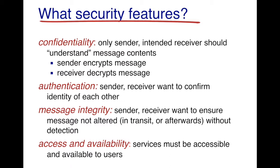The third feature is message integrity. Both the sender and receiver want to ensure the message is not altered in any form while in transit, or afterwards, without detection. For example, if Trudy intercepts a message from Alice to Bob and changes it, Bob should be able to detect that the message was altered. The fourth feature is access and availability — all services must be accessible at all times, and Trudy should not be able to prevent Alice's messages from reaching Bob.